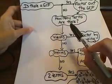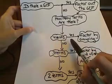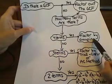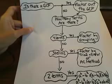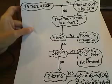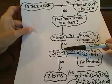So if we go down and we answer the question how many terms are there—if there's four terms, if the answer is yes, then we're going to factor by a process called grouping, and I'll do an example of that for you.